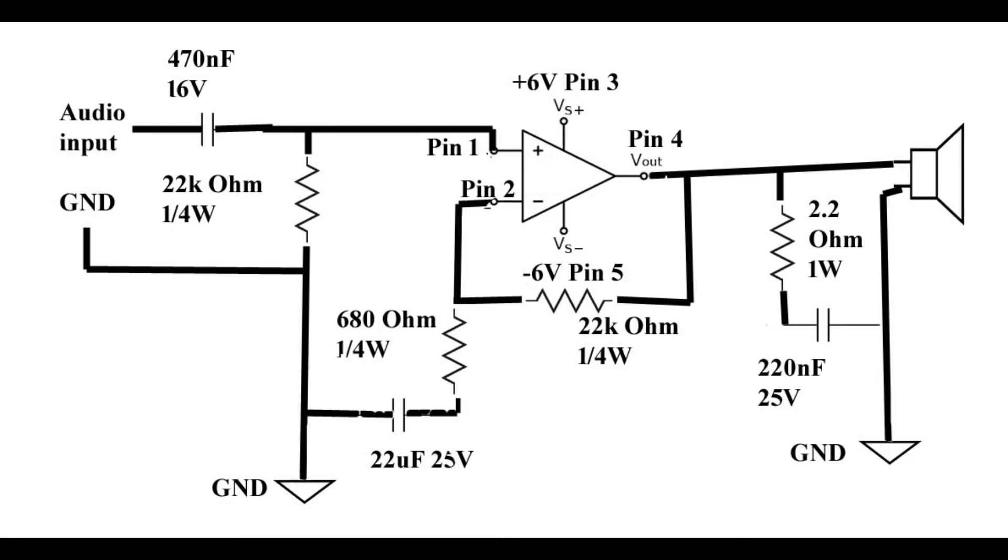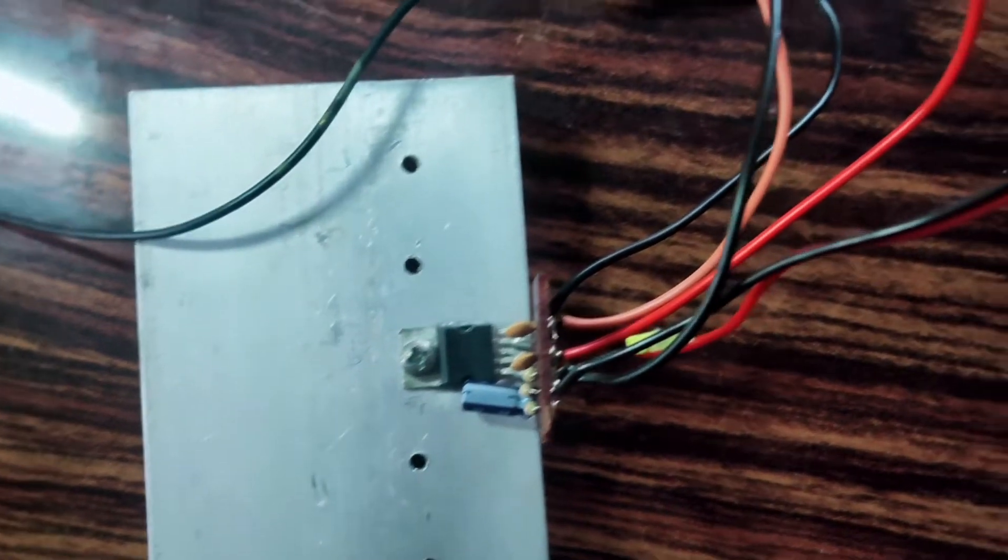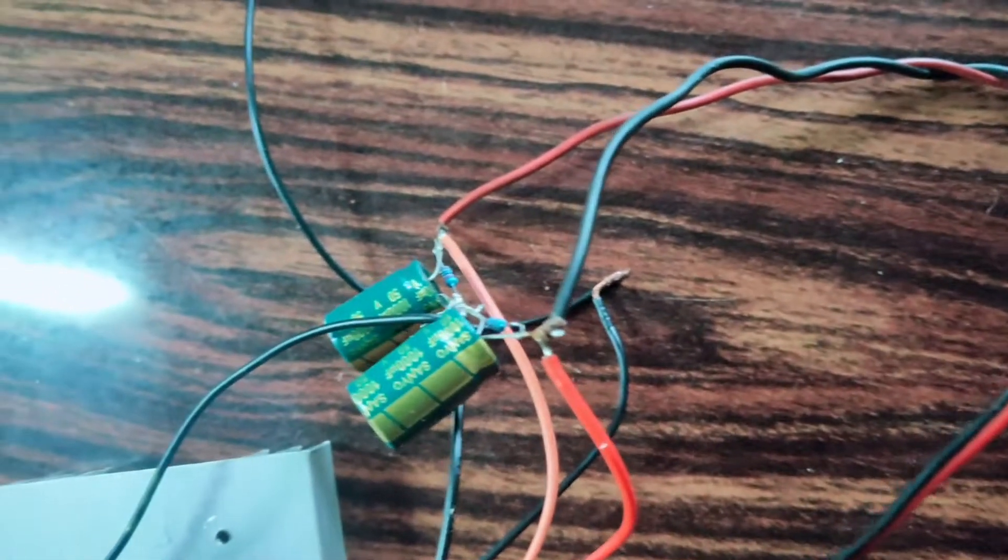This is the TDA2050 amplifier IC, its schematic. Without delay, let's move into the testing part. I have built the circuit.